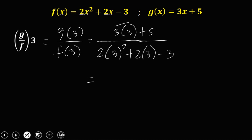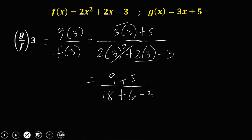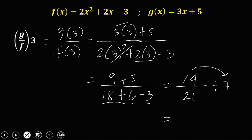Then simplify: 3 times 3 is 9, plus 5. For the denominator, 3 squared is 9, times 2 is 18. So 9 plus 5 is 14, and 18 plus 6 is 24, minus 3 is 21. Now 14 over 21 can be reduced — divisible by 7. So 14 divided by 7 is 2, and 21 divided by 7 is 3. Our final answer is 2 over 3. So this is all about the operation of functions.